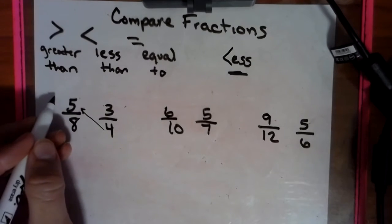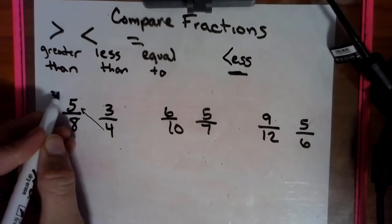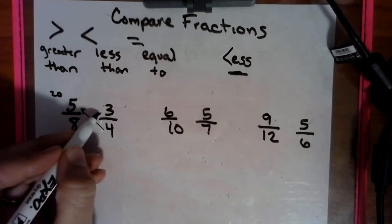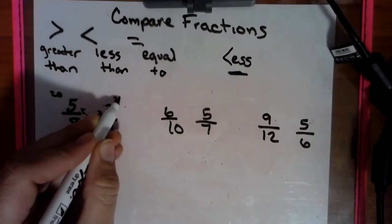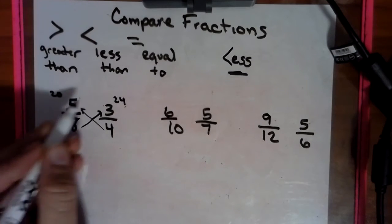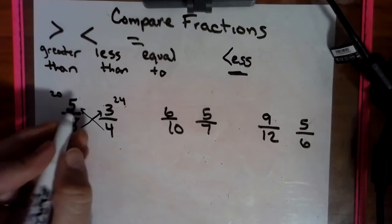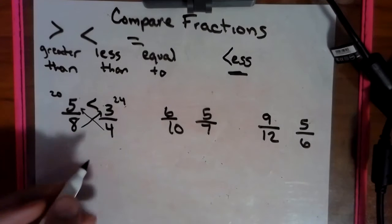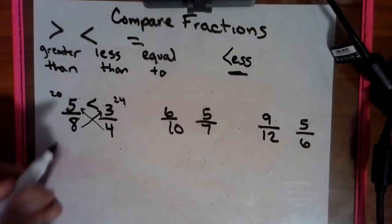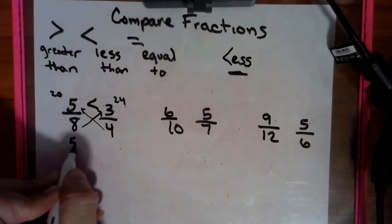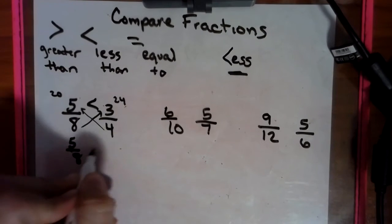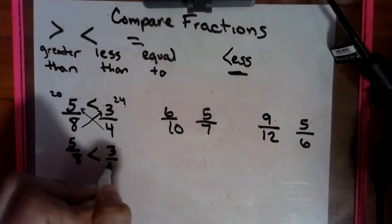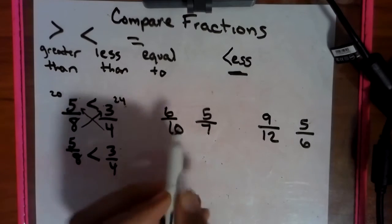So we go like this and we multiply them. We get 20, we multiply these, we get 24, and we ask ourselves, who's bigger? The 24 wins on that side, so our mouth goes that way. So we have 5/8 is less than 3/4.